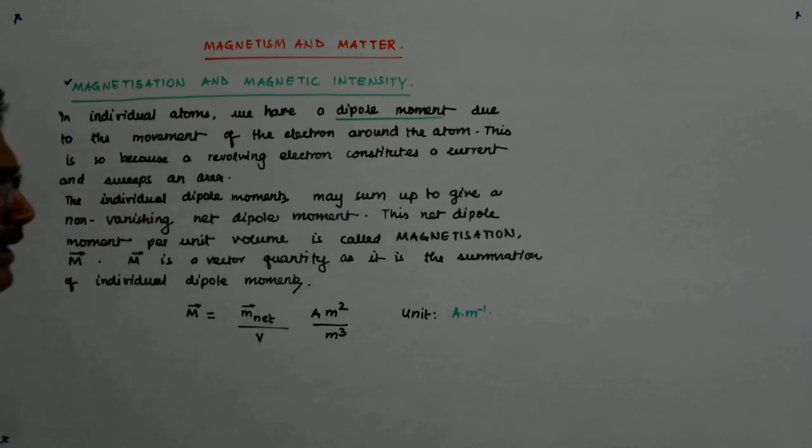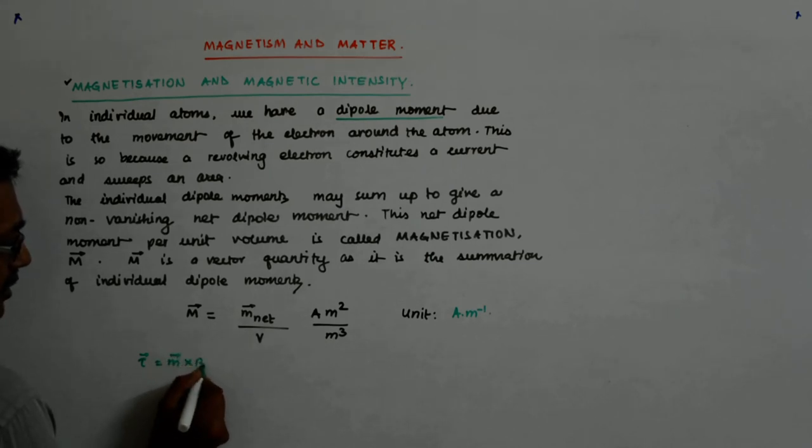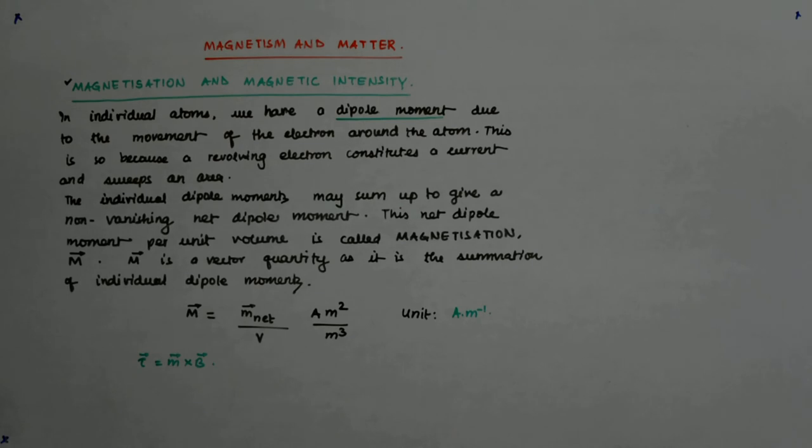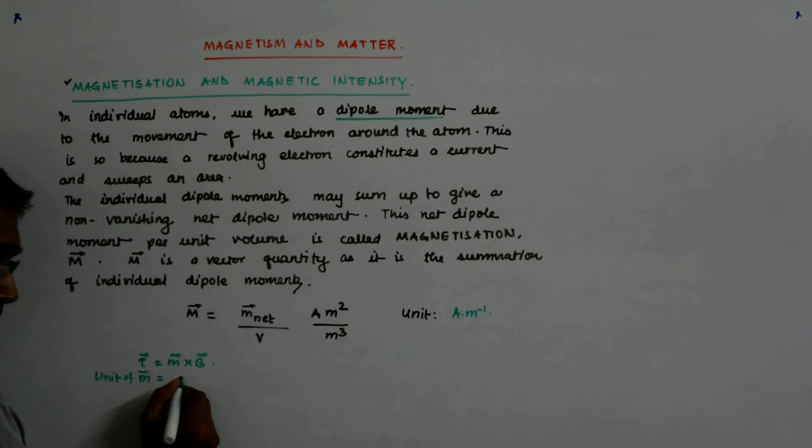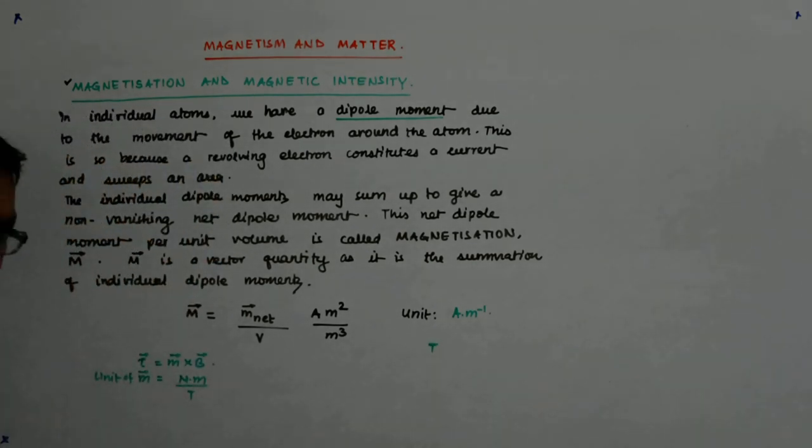Have you ever wondered that tau is equal to M cross B? What if I try to get the unit from here? Will you get the same unit? You should. So that means M, unit wise has to be the unit of tau which is R into F which is Newton into meter divided by one tesla. Now, what is tesla? How do you know the unit of a tesla? I mean to say that the dimension of a tesla.